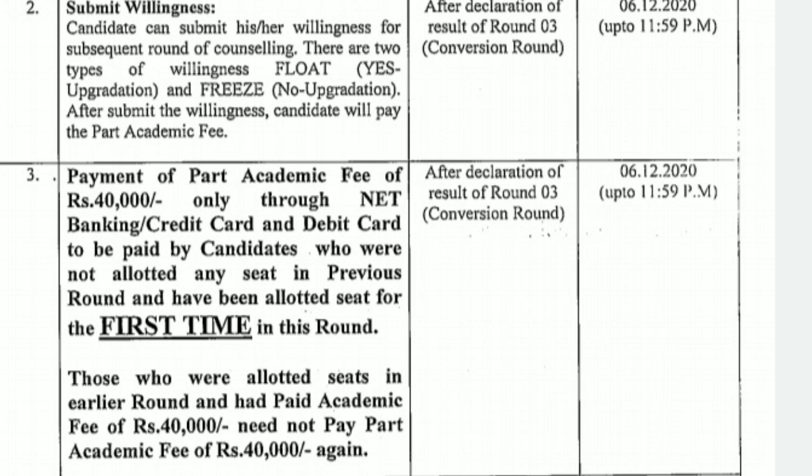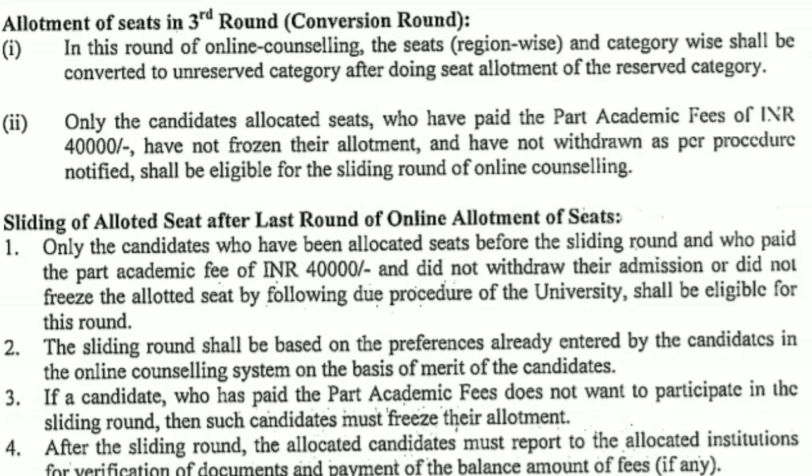After the declaration of the Round 3 result, you have to submit your willingness — this applies to students waiting for upgradation as well as those getting admission for the first time. Up to the 6th of December, you have to submit your willingness and also pay your part academic fee of ₹40,000 if you are getting admission for the first time.